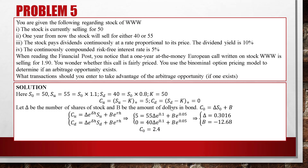So C0 = 2.4. The theoretical price of the European call is 2.4, but the market price is 1.9. Applying the rule — buy low, sell high — we buy the call (at 1.9), sell 0.3016 shares of stock, and lend $12.68 at the risk-free rate. The arbitrage profit is 2.4 − 1.9 = $0.50.